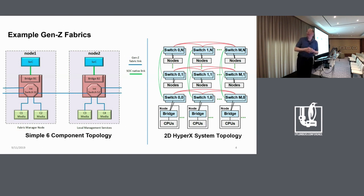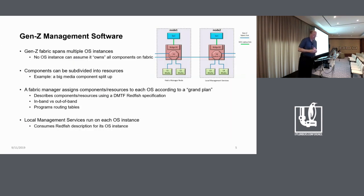Which leads to one of the prime features of a Gen Z fabric, which is that you can have multi-path. You can have software set up the routing to go between any number of those switches, directly two hops to get directly there or multiple hops along the way for redundancy or bandwidth improvements.